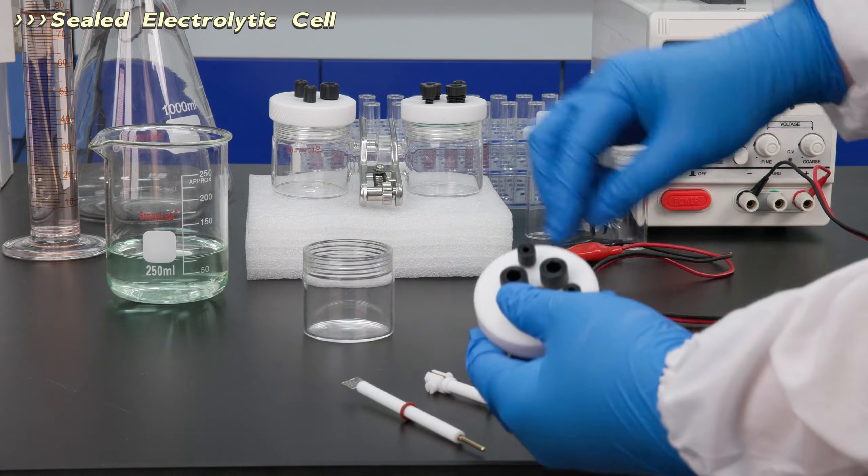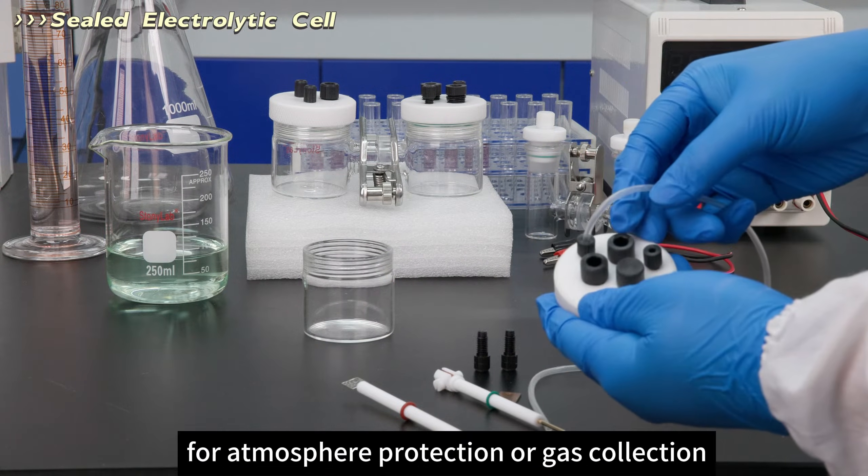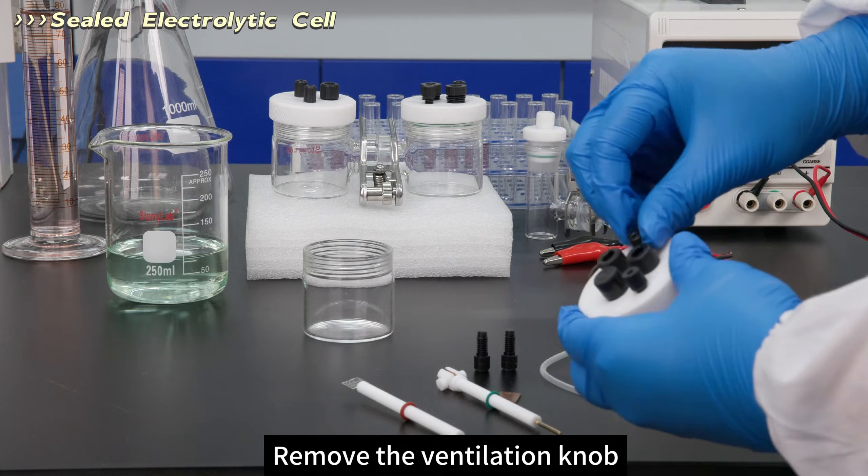How to set up an electrochemistry cell. The ventilation knob allows the insertion of a tetrafluoro tube for atmosphere protection or gas collection. Remove the ventilation knob.